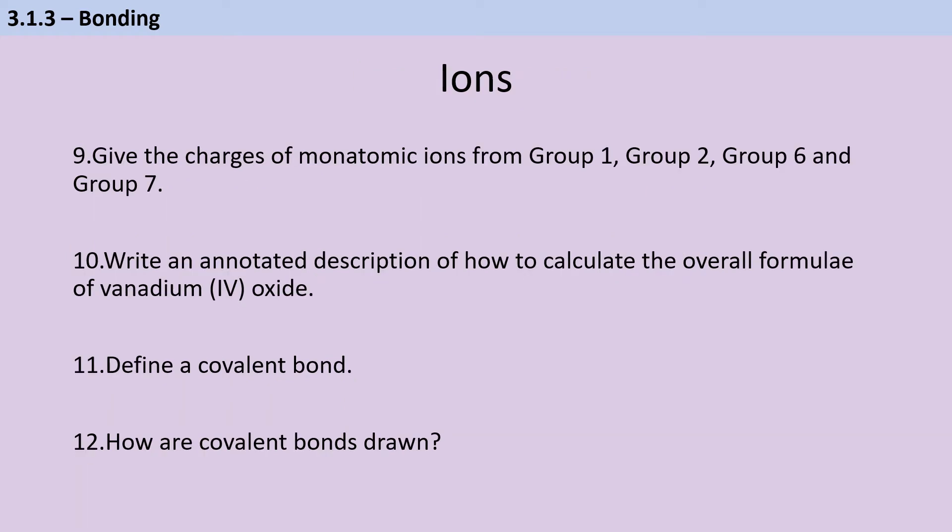Elements in group one form ions with a single positive charge, in group two with a two positive charge, in group six with a double negative charge, and in group seven with a single negative charge.